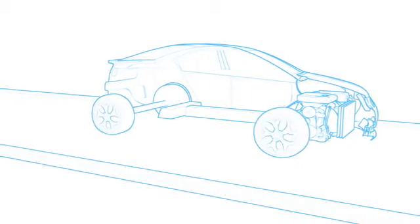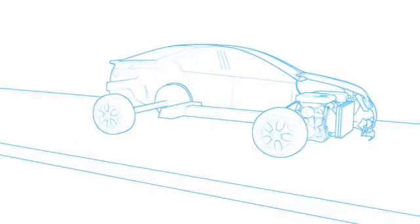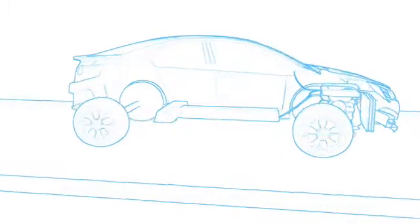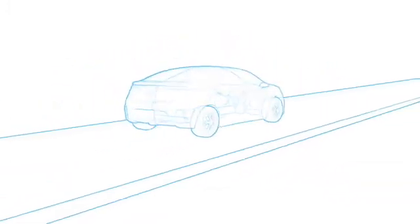The electric propulsion system inside the Ampera makes it all possible. This includes a T-shaped battery pack, a 111kW electric drive unit, and an engine generator for electricity.